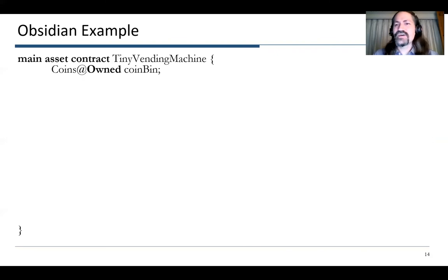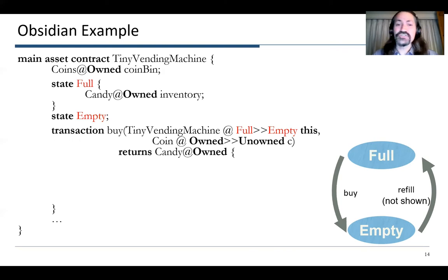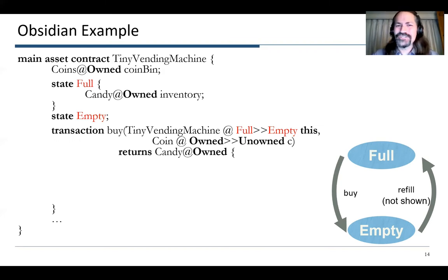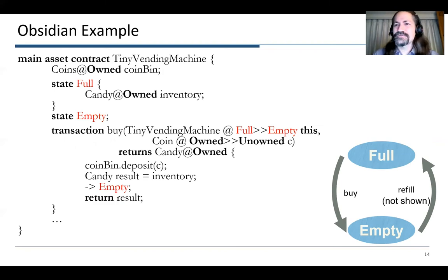Here's a glimpse at what Obsidian looks like. We have a contract TinyVendingMachine that has some coins in the coin bin. It has two states: the Full state, in which there is some candy in the inventory, and the Empty state. We can have a transaction such as Buy, and the signature of the transaction tells us what happens — the TinyVendingMachine will go from Full to Empty. We pass in a coin initially owned by the client, which will be taken up by the vending machine, so afterwards it will no longer be owned by the client. However, we will return some candy, which the client will then own. We take the coin bin, deposit the coin, get the candy out of the inventory, transition to Empty, and return the candy to the user.